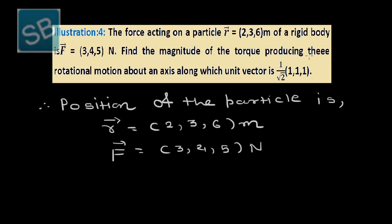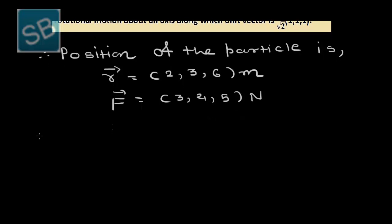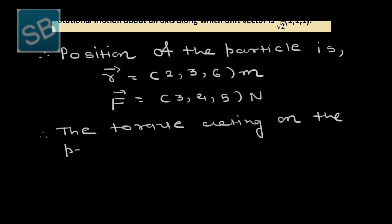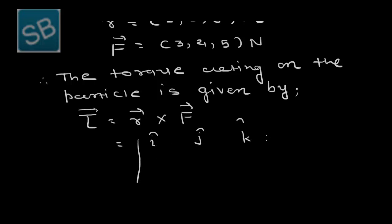Our first task is to find the magnitude of the torque producing rotational motion. The torque on the particle is τ = r × F. Setting up the determinant with i, j, k in the first row, r = (2, 3, 6) in the second, and F = (3, 4, 5) in the third.